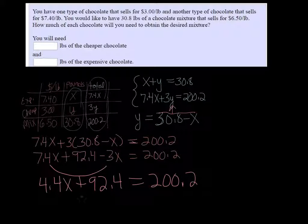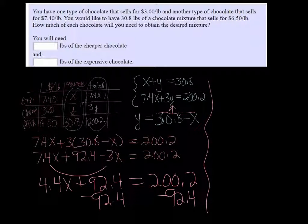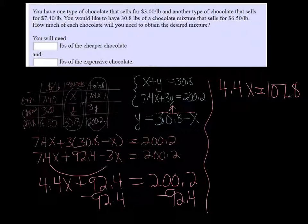Then if we subtract the 92.4 on both sides, we get 4.4X is equal to 107.8. And if we divide both sides by 4.4...